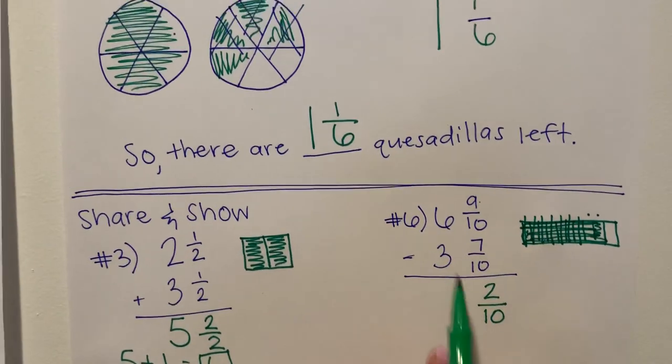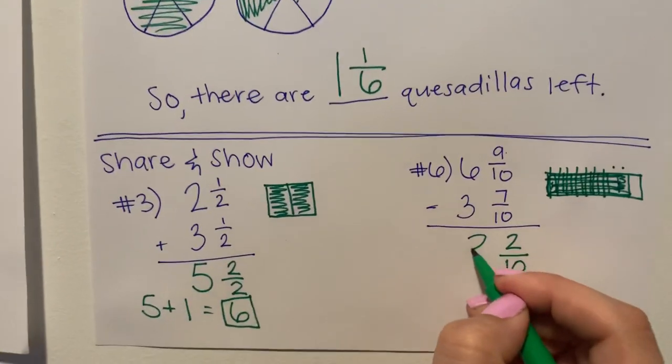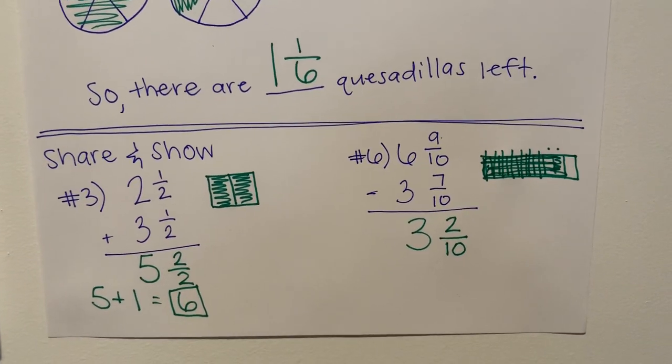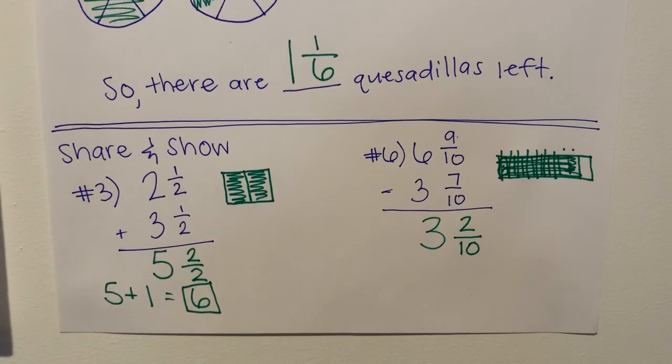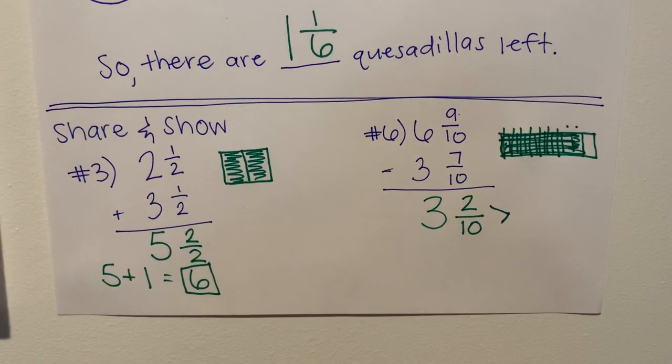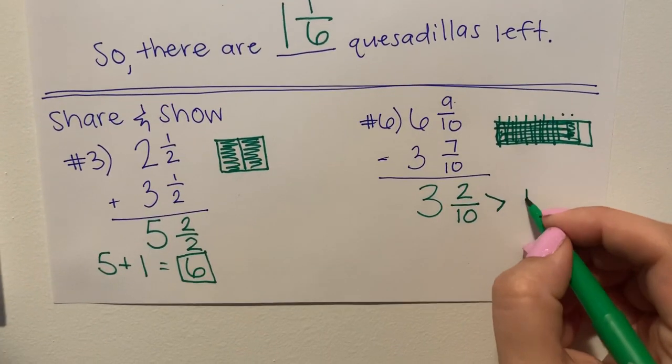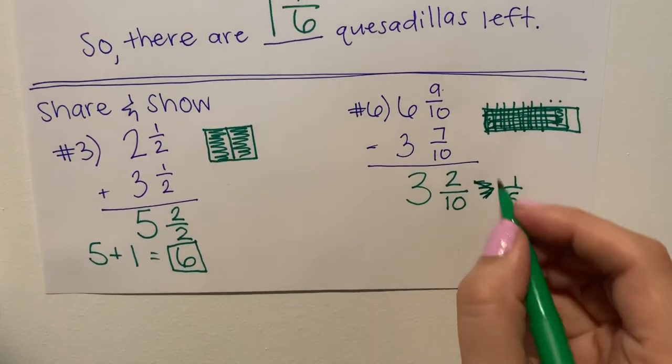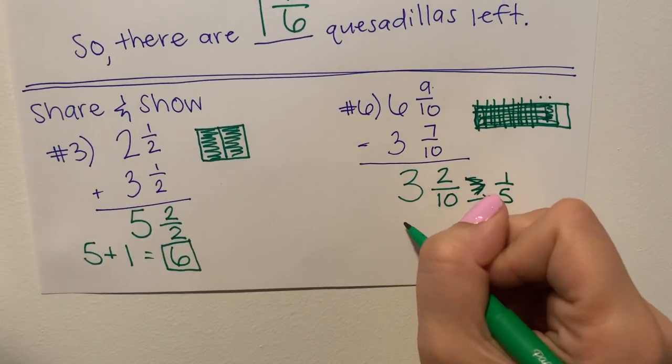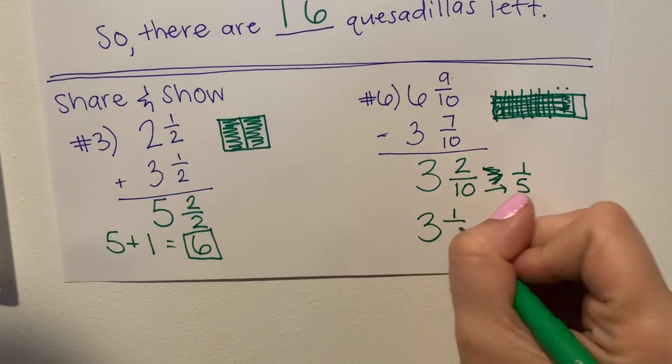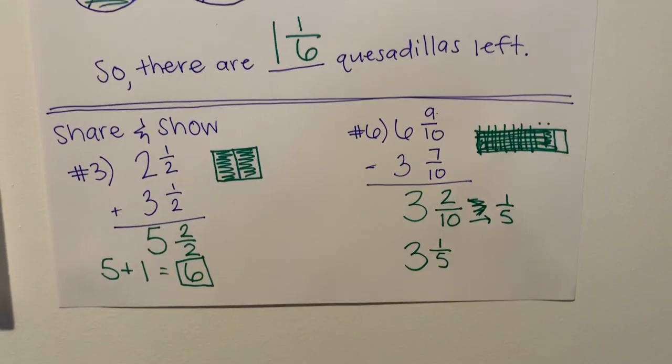Now I'm going to subtract six minus three, six minus three equals three, three and two tenths is something that I really don't need to rename. However, some of you might have noticed that if we look at two tenths, we can actually simplify that to one fifth. So you can either say three and two tenths for this problem, or if you picked up on it, you can also rename that to three and one fifth. It's the same thing.